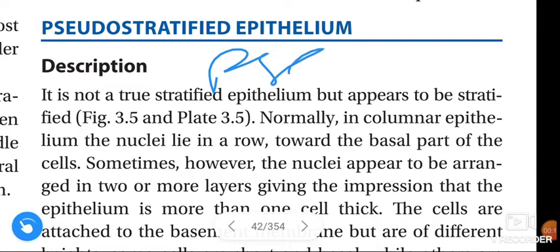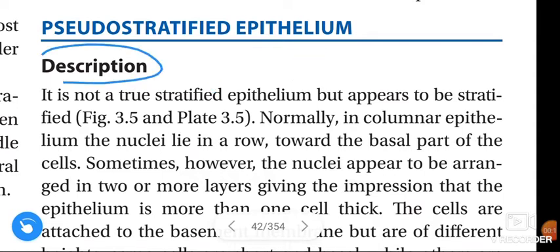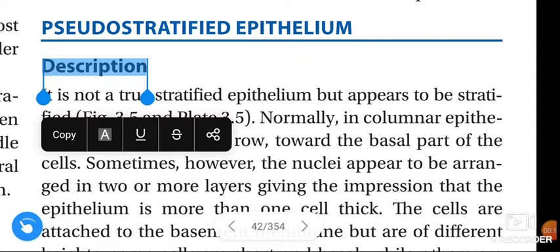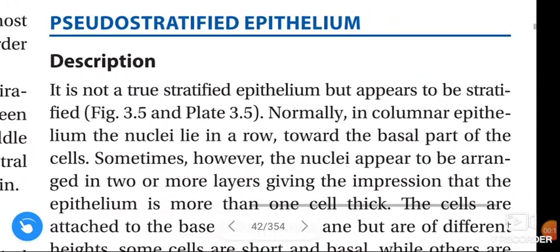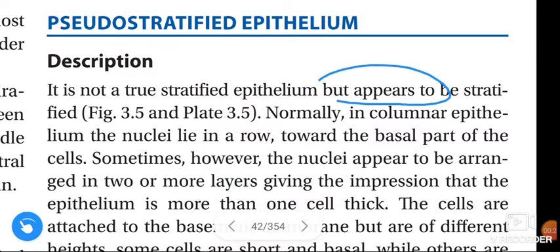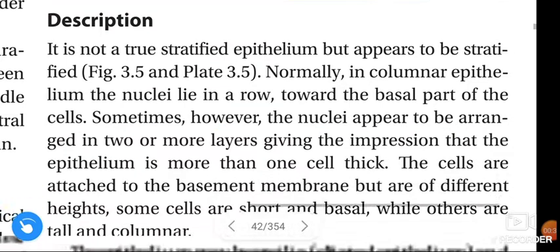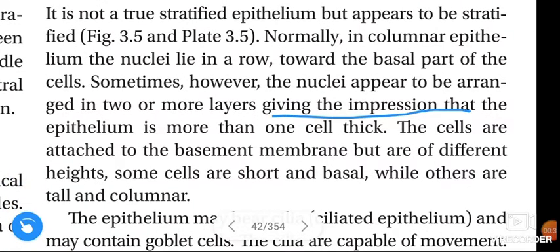Pseudo-stratified epithelium is not a true stratified epithelium but appears to be stratified. Normally, in columnar epithelium the nuclei lie in a row toward the basal part of the cells. Sometimes, however, the nuclei appear to be arranged in two or more layers, giving the impression that the epithelium is more than one cell thick.